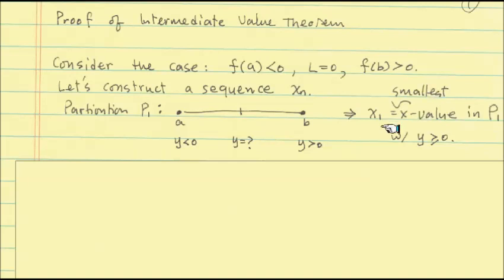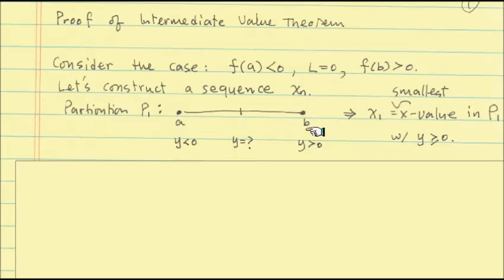So what is our first element x_1? x_1 is the smallest element among those three partition points such that the y value is greater than or equal to zero. We know at the left endpoint the y value is negative. We do not know about the middle, but we know definitely the right endpoint is positive. So we know there is at least one element. If the middle is still positive, it will be smaller than the right endpoint, so we choose x_1 to be that smallest one with non-negative function value.